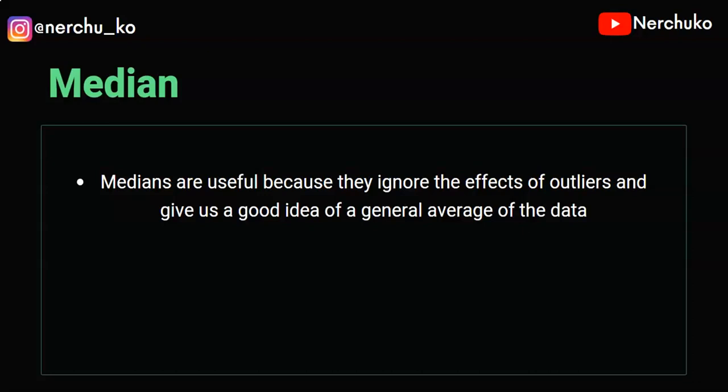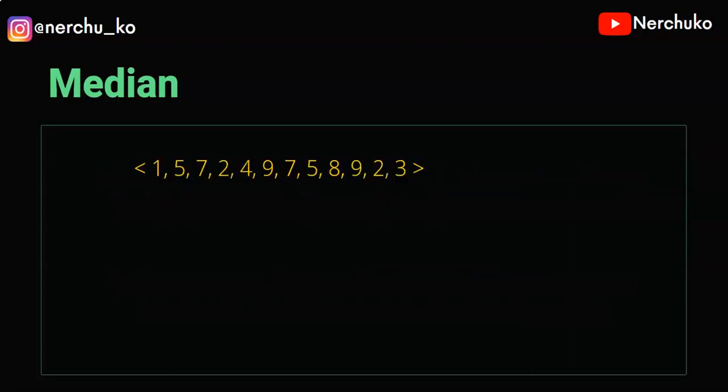The median means the middle value. Like, for a median example, if we have the data points: 1, 5, 7, 2, 4, 9, 7, 5, 8, 9, 2, 3 — we will find the median from these values.